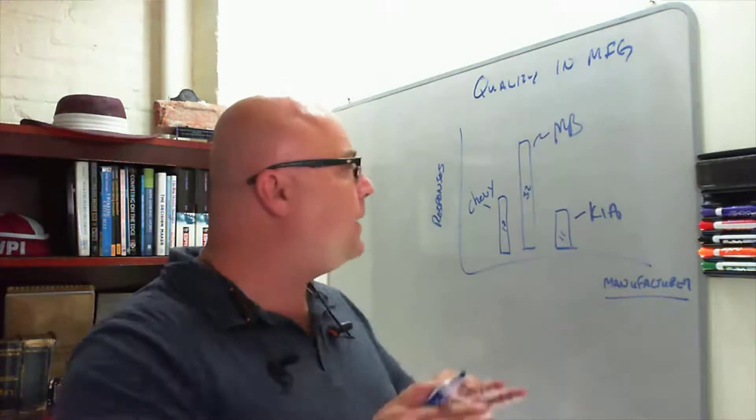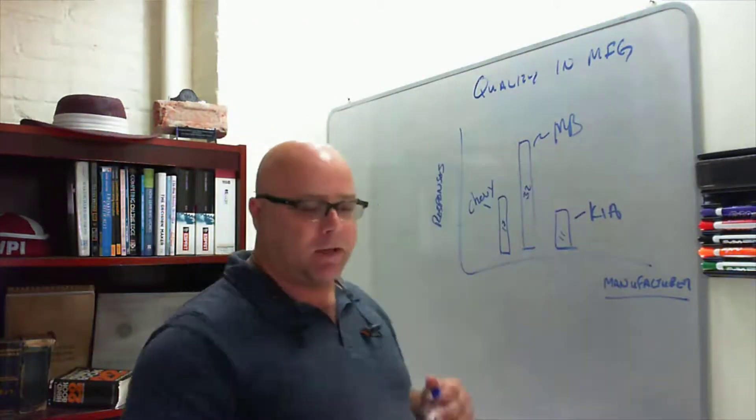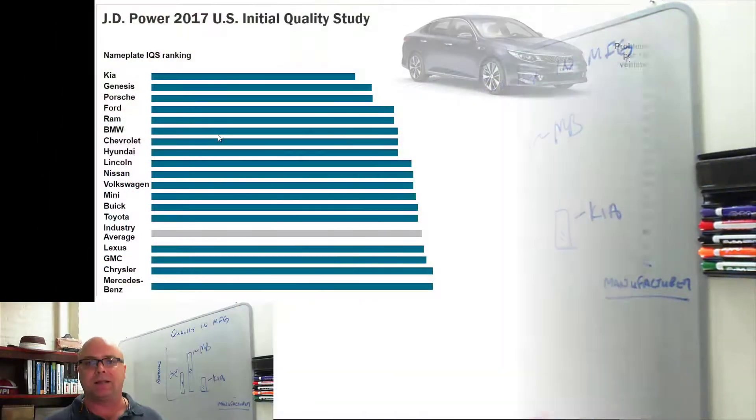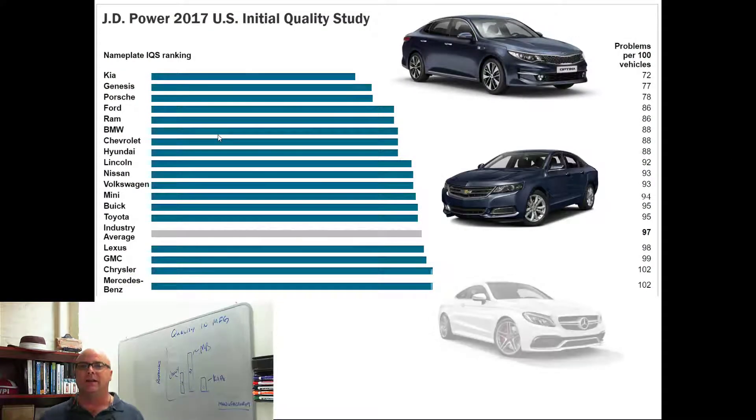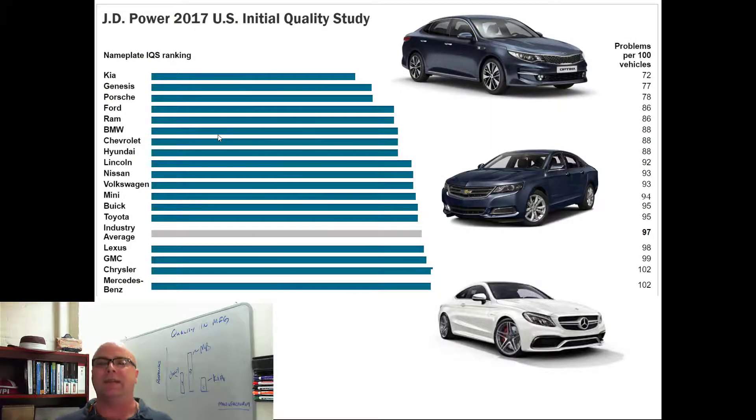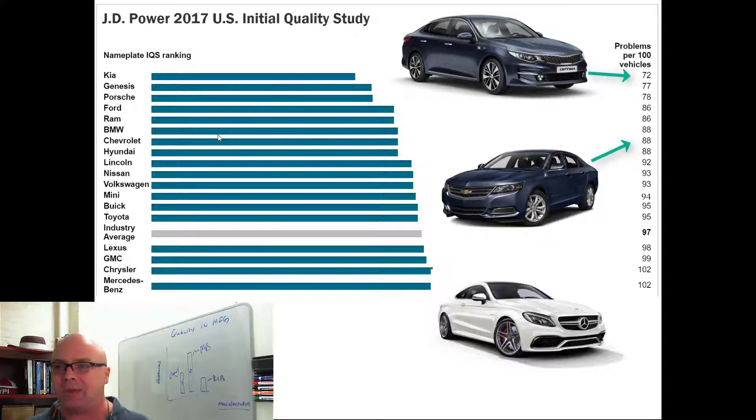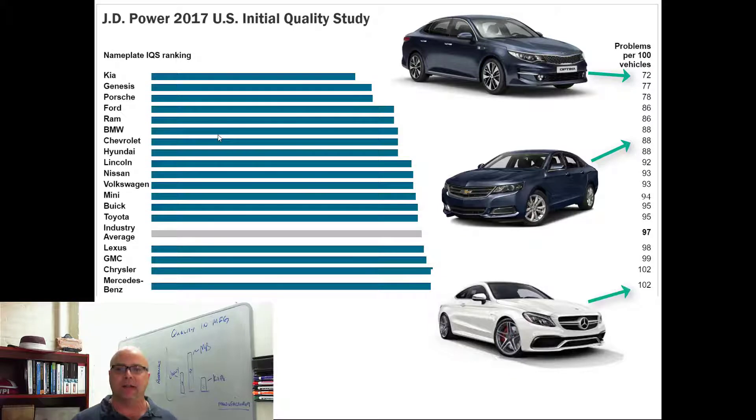And so we go through this, we talk about that for just a second. And then we bring up this study by J.D. Power in 2017 of initial quality. And so what they said here was for every hundred vehicles sold, Kia had 72 reports of problems, Chevrolet 88 reports of problems, and Mercedes-Benz 102.